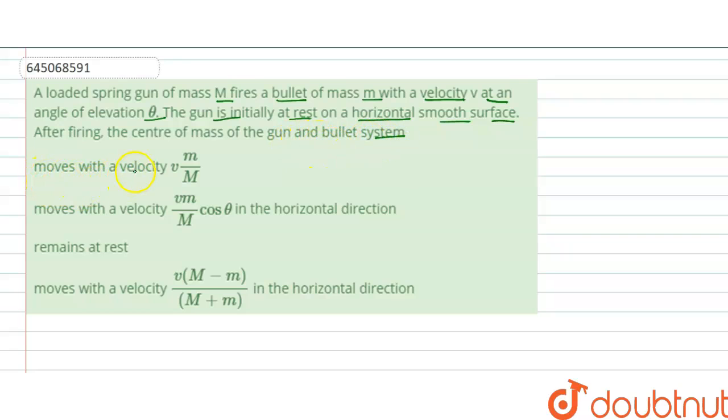moves with velocity m/M, moves with velocity vm/M cos θ in the horizontal direction, remains at constant, and the final option is moves with velocity v(M-m)/(M+m) in the horizontal direction.